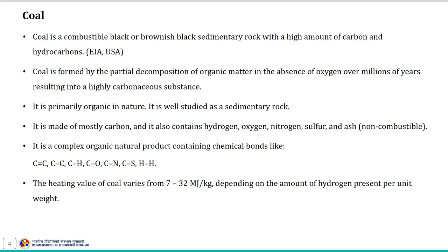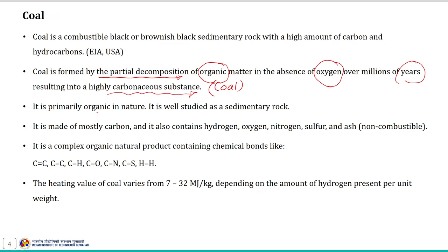Coal is a combustible black and brownish-black sedimentary rock with a high amount of carbon and hydrocarbons. It is formed by the partial decomposition of organic matter in the absence of oxygen over millions of years, resulting in a highly carbonaceous substance. It is primarily organic in nature and is made mostly of carbon, and also contains hydrogen, oxygen, nitrogen, sulphur, and ash.